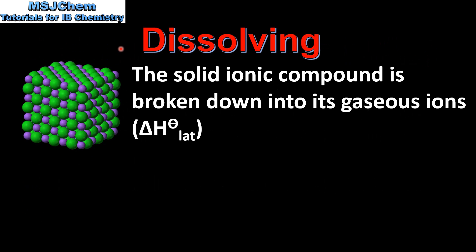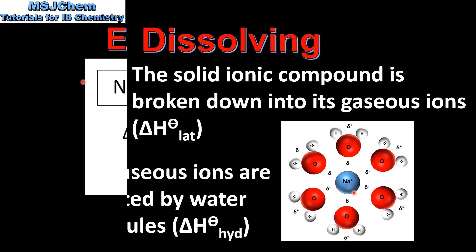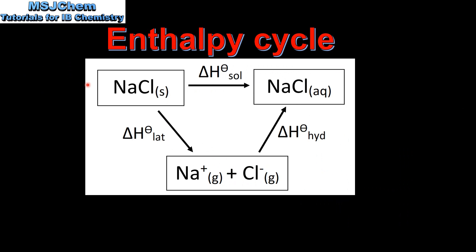Next we look at dissolving. The first step is the solid ionic compound is broken down into its gaseous ions — that's the lattice enthalpy. In the next step the gaseous ions are hydrated by water molecules, which is the enthalpy of hydration. Here we have a sodium ion being hydrated by water molecules where the negative dipole on the water molecule is attracted to the positive sodium ion.